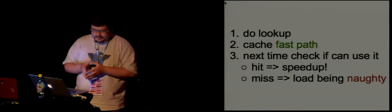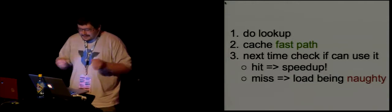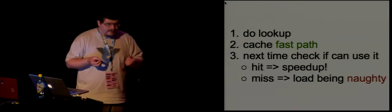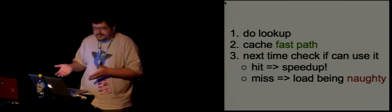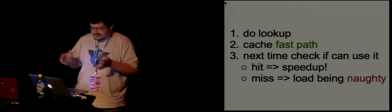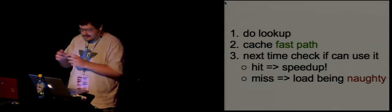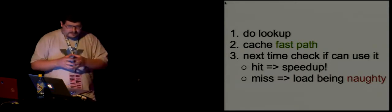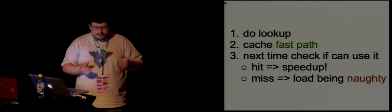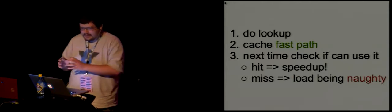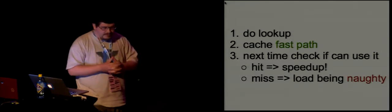So we have a master plan, and the master plan is very simple. You do a lookup of the property, and then you cache the result of this lookup — where did you find the property? Was it at the object itself? At which offset? Or was it on the prototype? At which offset? Was it a getter or setter? Was it a lookup on the array for a property called 42? You cache this information in some condensed way. Next time you hit the same lookup in the code, you look at what you cached, and if it's still applicable, you use this cached fast path and get the speed up. If it's not applicable, you understand this operation is being naughty and should be punished with a slowdown.